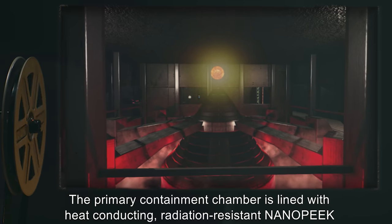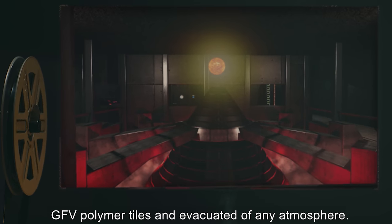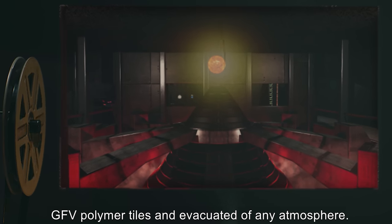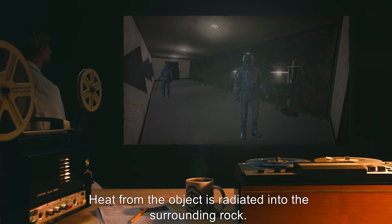The primary containment chamber is lined with heat-conducting, radiation-resistant nanopeak GFV polymer tiles and evacuated of any atmosphere. Heat from the object is radiated into the surrounding rock.